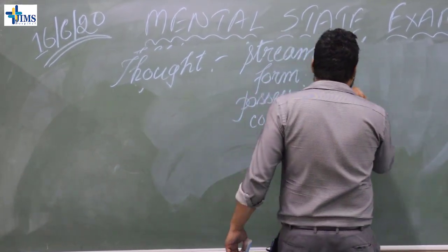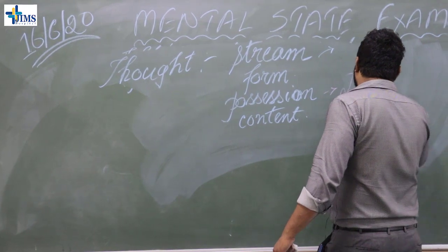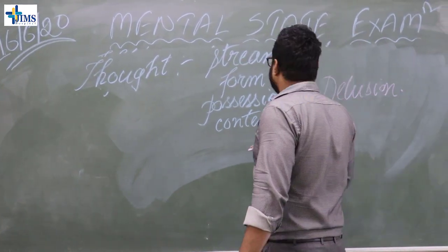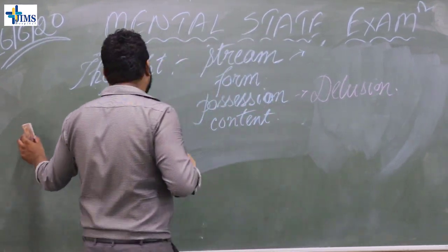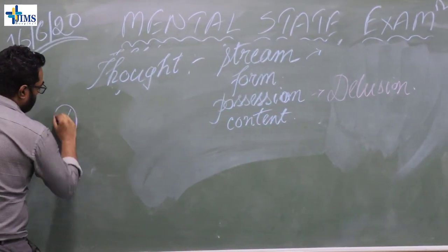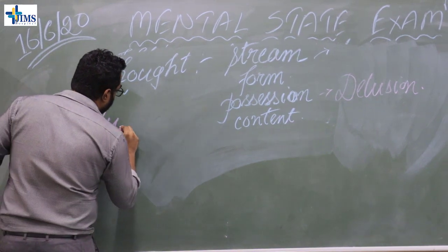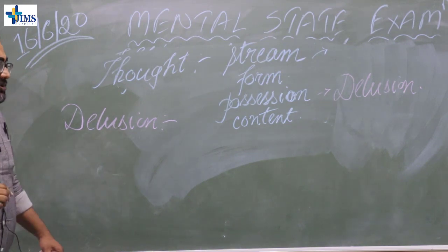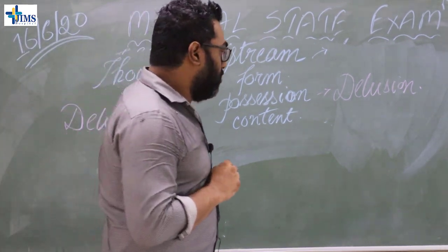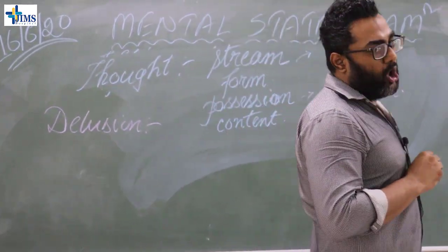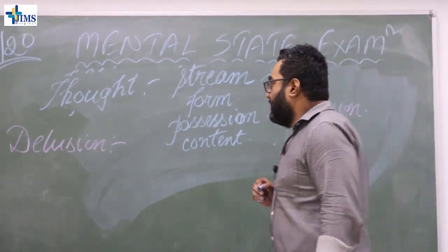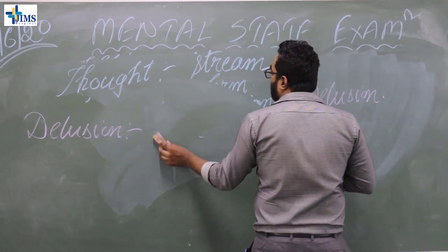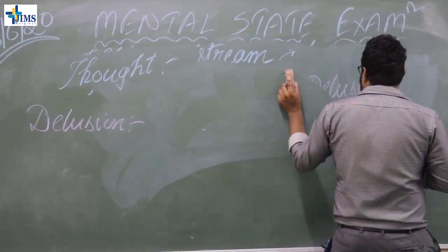In possession of thought we find delusions. I will write the definition of delusion here. A delusion is a false, fixed belief which is against the social and cultural norms of the person, and which is not changed even after evidence to the contrary has been provided.